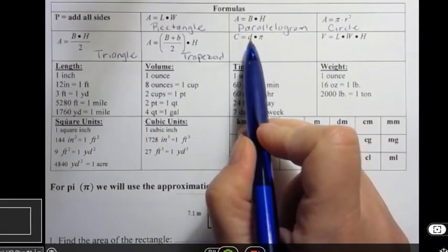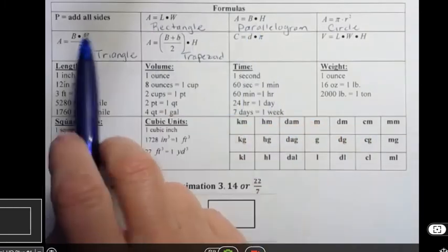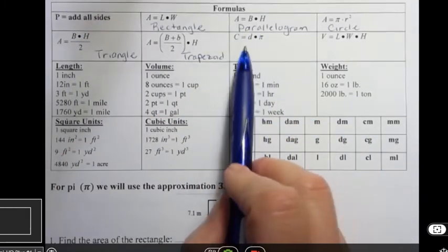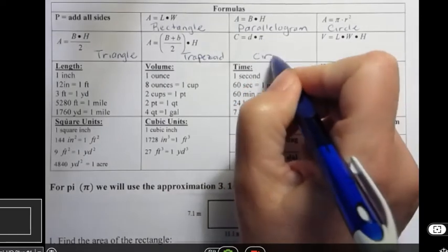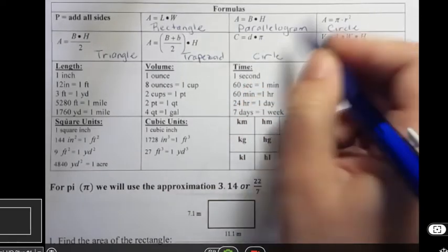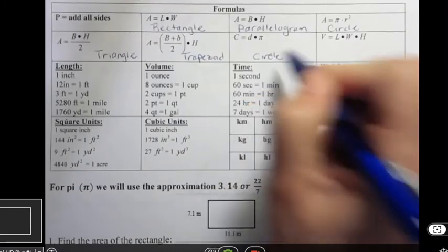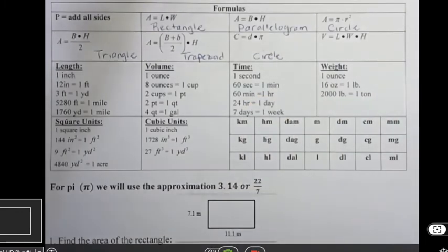Big base plus little base divided by 2 times height is a trapezoid. And circumference equals diameter times pi. That's similar to perimeter, where circumference is just the distance around a circle. Anytime you see a pi, you know there's some kind of circle involved. And then volume is length times width times height. We'll refer back to this on other videos, so I just wanted to have this basic formula chart there.